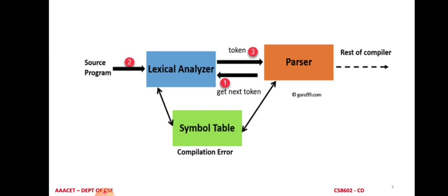Three pieces of information are stored. The first is the name — it is 'id1' because 'a' is the first identifier identified by the lexical analyzer, then id2, id3, and so on. The second is the identifier type; since 'a' may be declared as integer or float, we store the type, for example integer. The third is the address — the value is stored at address 1000. So the symbol table holds identifier name, type, and address.